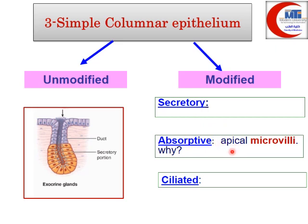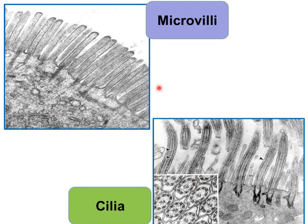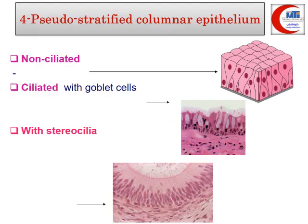Simple columnar epithelium may also be modified for absorption, with the apical part of the cell provided with microvilli — finger-like projections that increase surface area for absorption. It may also be ciliated, with cilia on the apical surface. The detailed structure of both microvilli and cilia was covered in the cytology lecture.